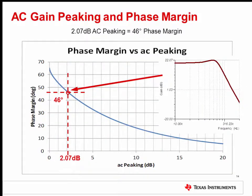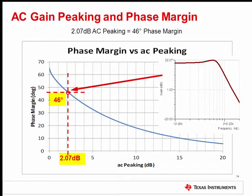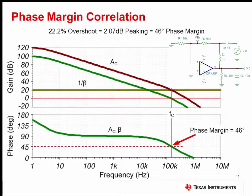The phase margin versus AC gain peaking curve is shown here. To determine the phase margin, first find the x-axis coordinate for the 2.07 dB of AC gain peaking, then draw a straight line up until it intersects the phase margin versus AC gain peaking curve. Draw a horizontal line at this point to the y-axis to determine the phase margin. The 2.07 dB of AC gain peaking correlates to 46 degrees of phase margin, matching the phase margin obtained from the percent overshoot measurements. The open loop phase margin measurement from the previous video directly measured 46 degrees, verifying the accuracy of both indirect methods.